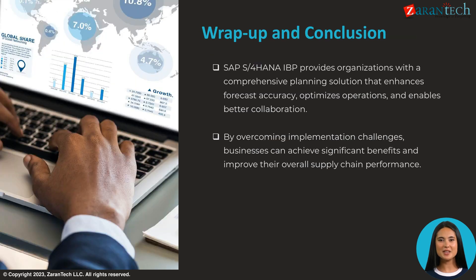In summary, SAP S/4HANA IBP delivers major benefits through enhanced forecasting, optimized operations, and collaboration. By overcoming implementation challenges, businesses can significantly improve their supply chain performance.